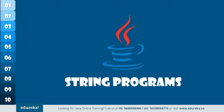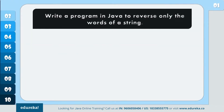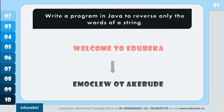Let's begin with some important programs on strings. The first program's problem statement says: write a program in Java to reverse only the words of a string. Suppose you have a statement like 'welcome to Edureka' — in this you just have to reverse the words, but the sentence should remain the same. Let's see how to do this.